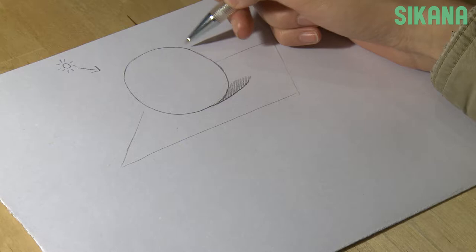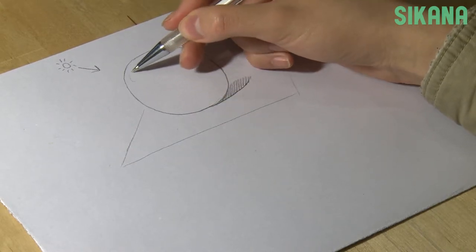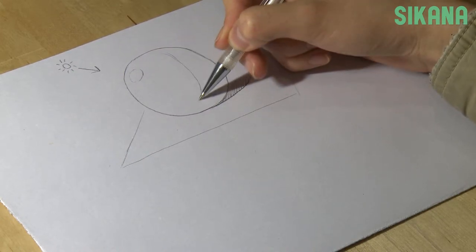The shadow also extends onto part of the ball. First, we're going to make a small reflection here to mark the part of the ball that is directly exposed to the light.